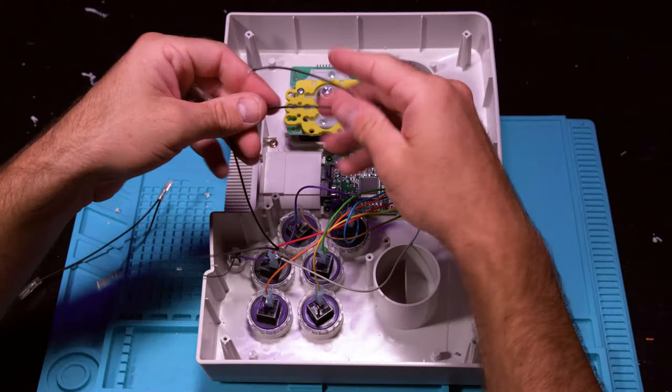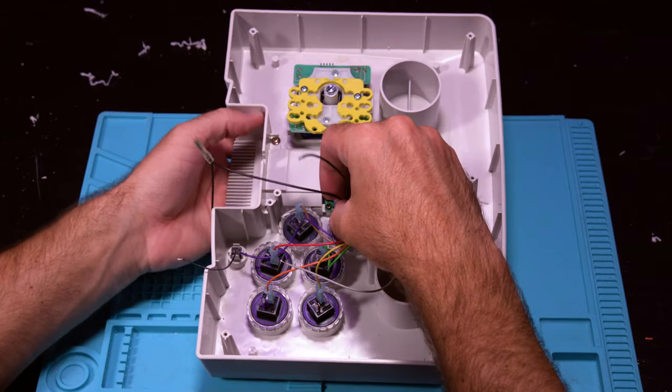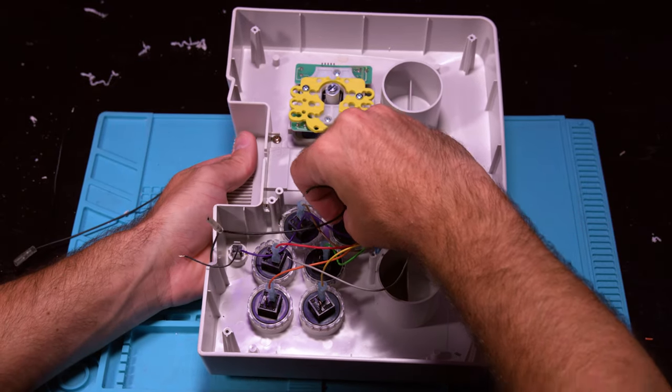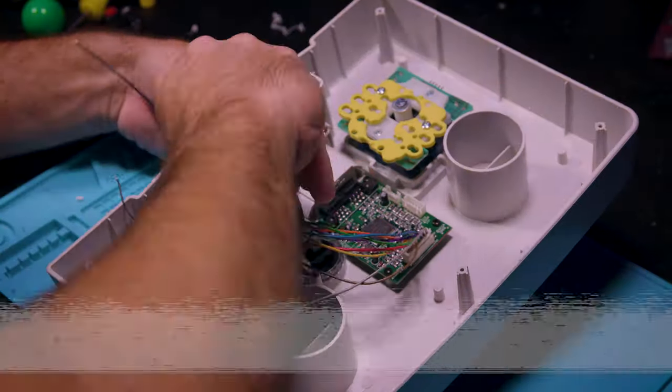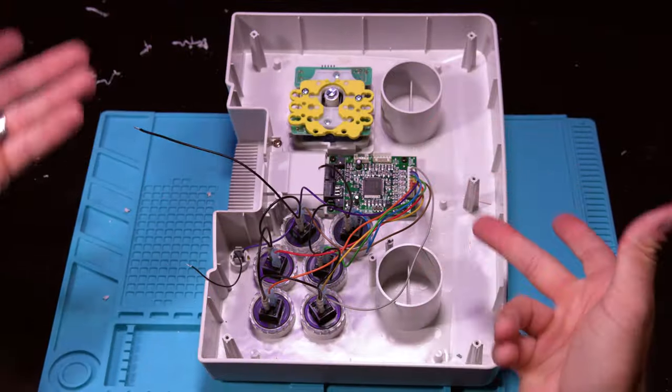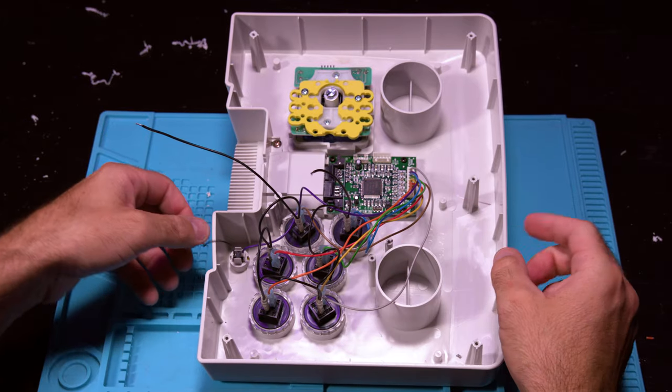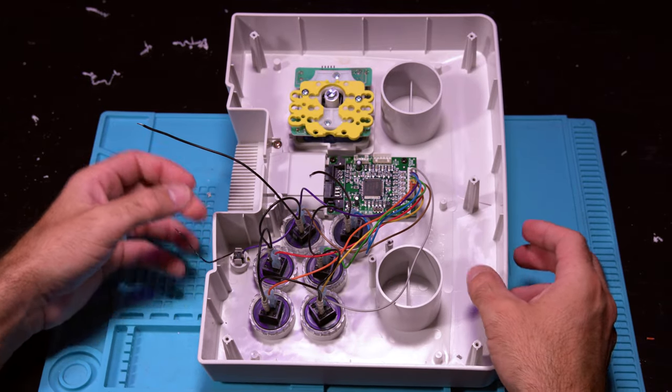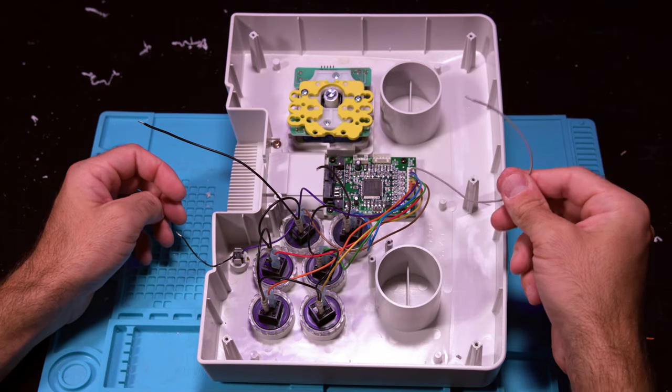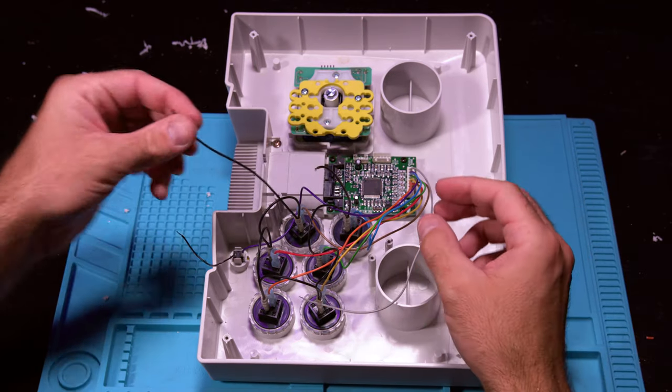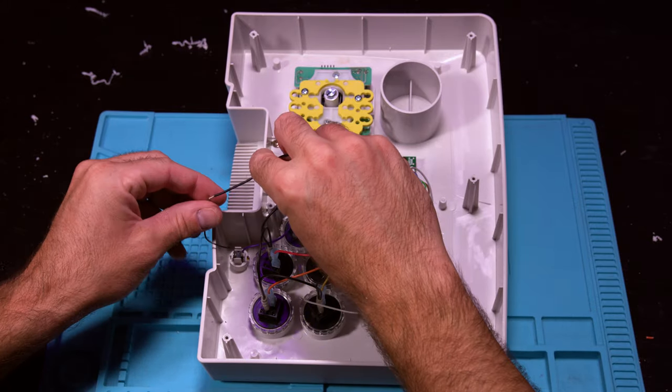Now it's time to connect up all of your ground wires. Let's start by connecting up each button with a ground wire from the daisy chain. Once each button is connected, we need to solder the start button ground wire, as well as the gray ground wire stemming from the button harness to our daisy chain. You can also use wire connectors if you prefer not to solder.